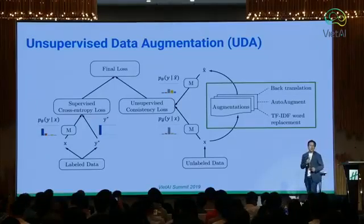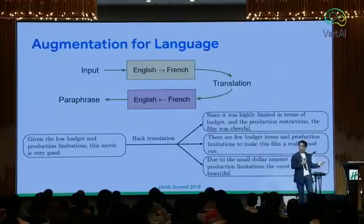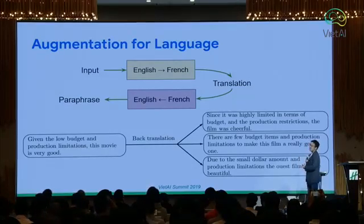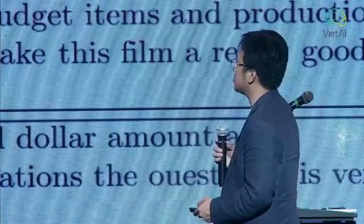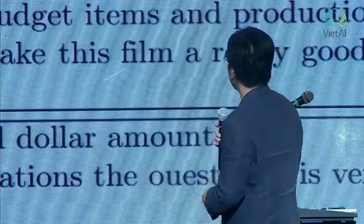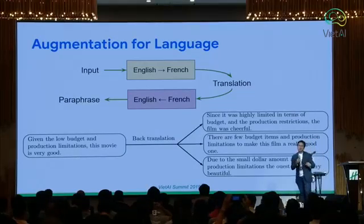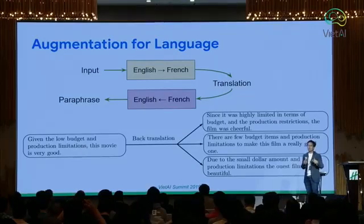For UDA, what we did differently are actually very simple changes. Instead of adding noise, we add a better kind of noise — augmentation methods to change our input. For language, if you have a sentence, you translate to French and then translate back into English, and now you have a new sentence. For example, 'given the low budget and production limitations, this movie is very good' becomes 'there are a few budget items and production limitations to make this film a really good one.' The language is a bit different but it still has similar meaning. This is how we manipulate our input so the model becomes more robust to input changes.